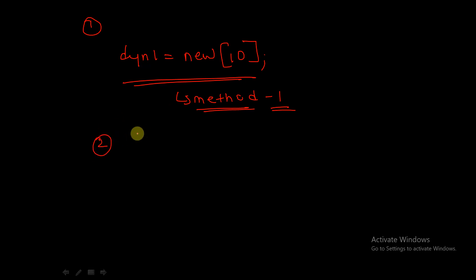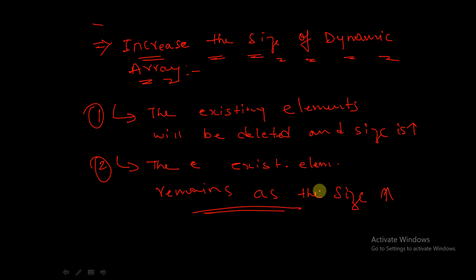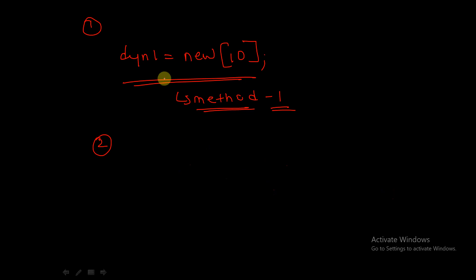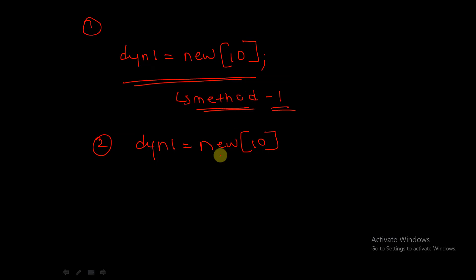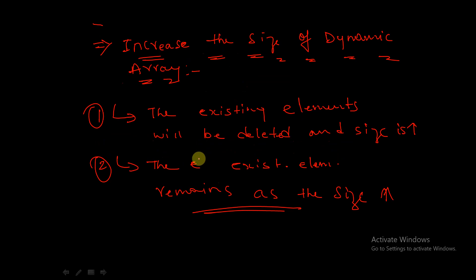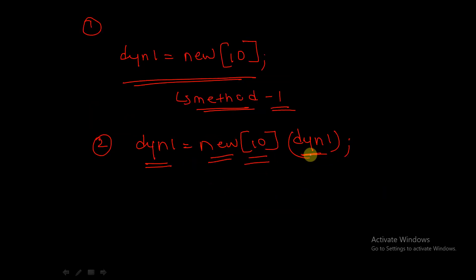For method two — existing elements remain and size increases — if we want the existing elements not to be deleted while increasing the size, we write: dyn1 = new[10](dyn1). The existing elements in dyn1 will stay as they are, and the extra five locations will be added.